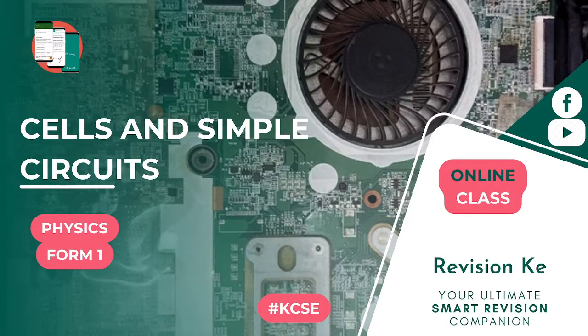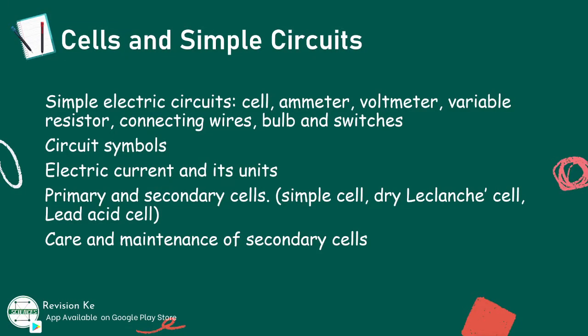Cells and simple circuits is our topic of discussion today. By the end of this topic, you, the learner, should be able to draw and set up simple electric circuits, identify circuit symbols, define electric current, explain the working of primary and secondary cells, and finally, explain the care and maintenance of secondary cells.